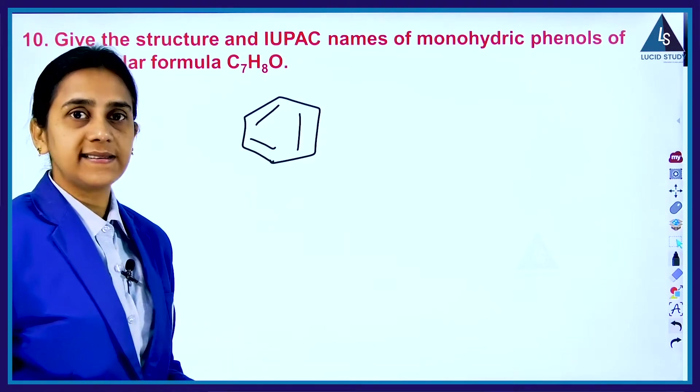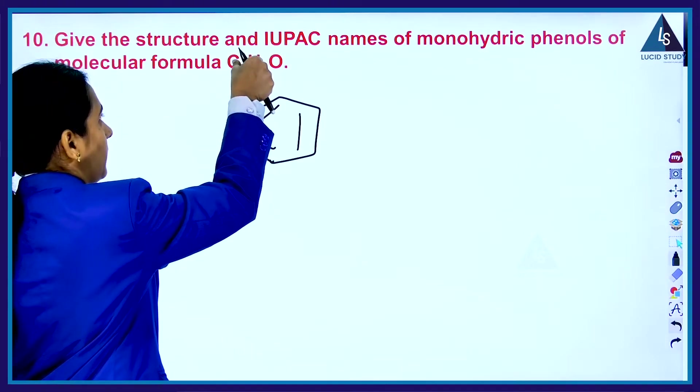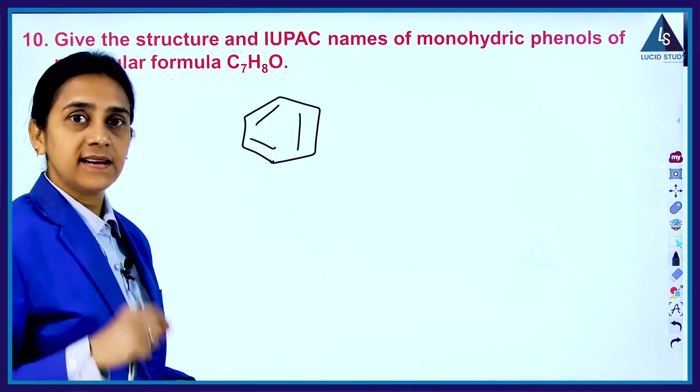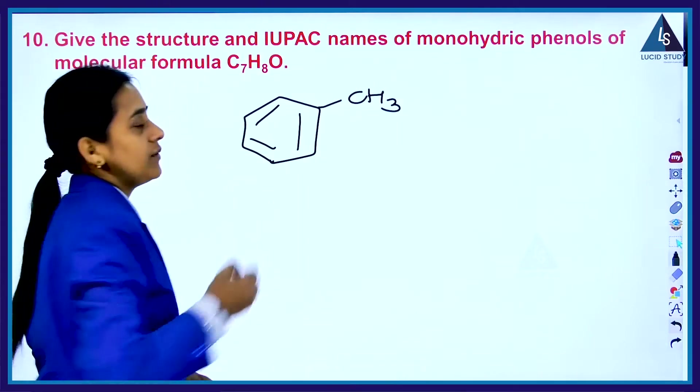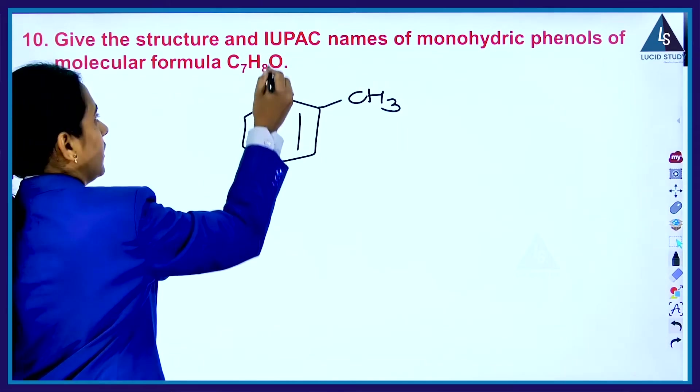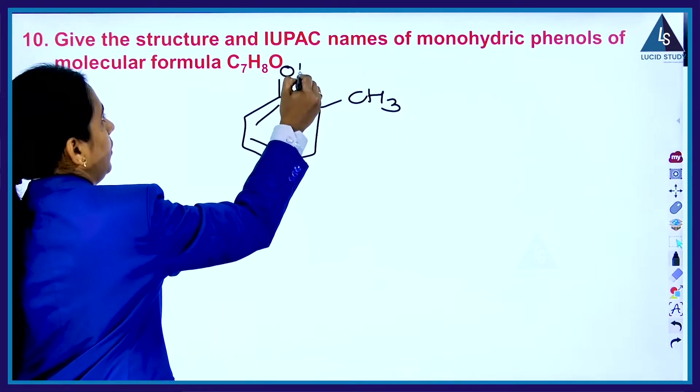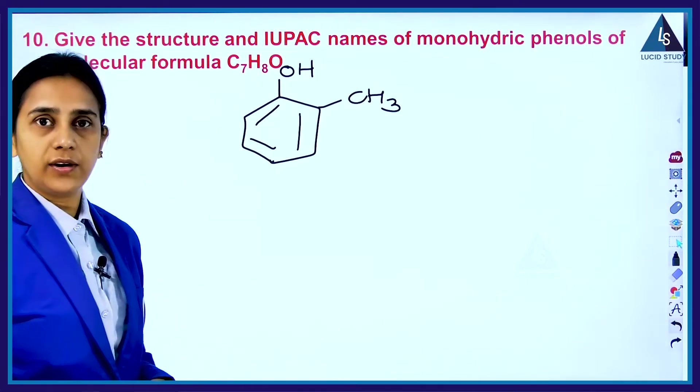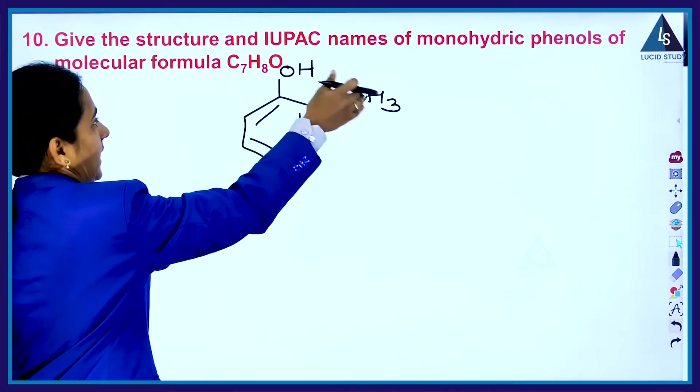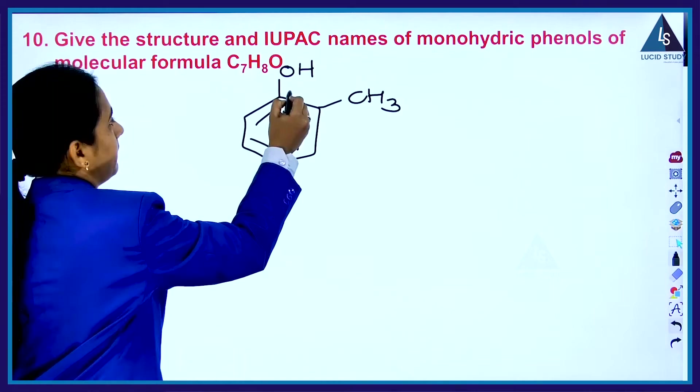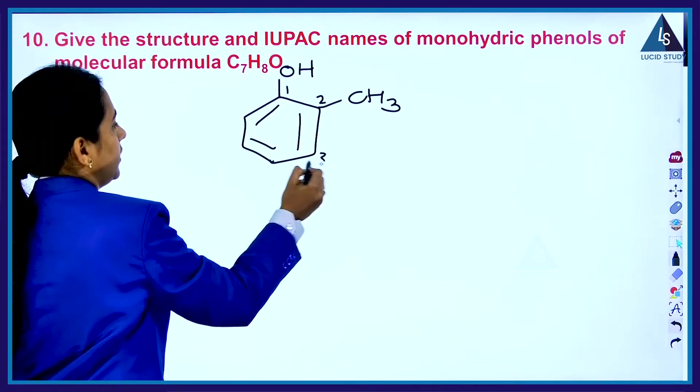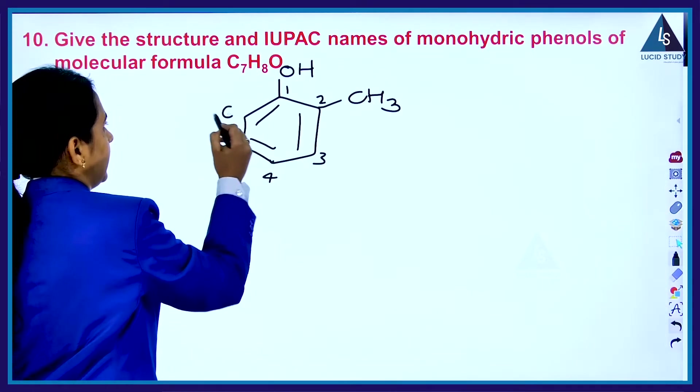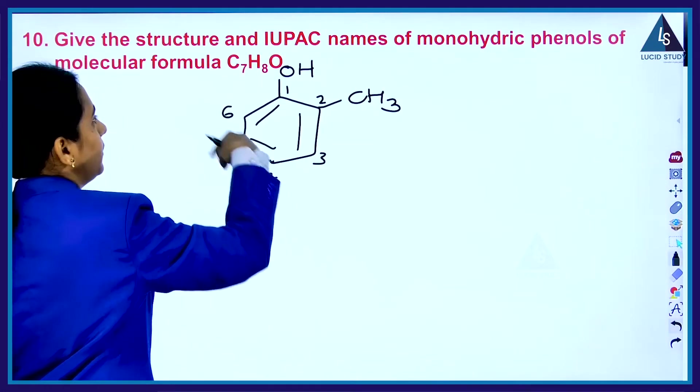Benzene is C6H6, so from this formula I have used C6H6. The remaining one carbon is there, I am using it as CH3, and oxygen is also there, O and H, that is a phenol group. This is phenol and this is a methyl group.